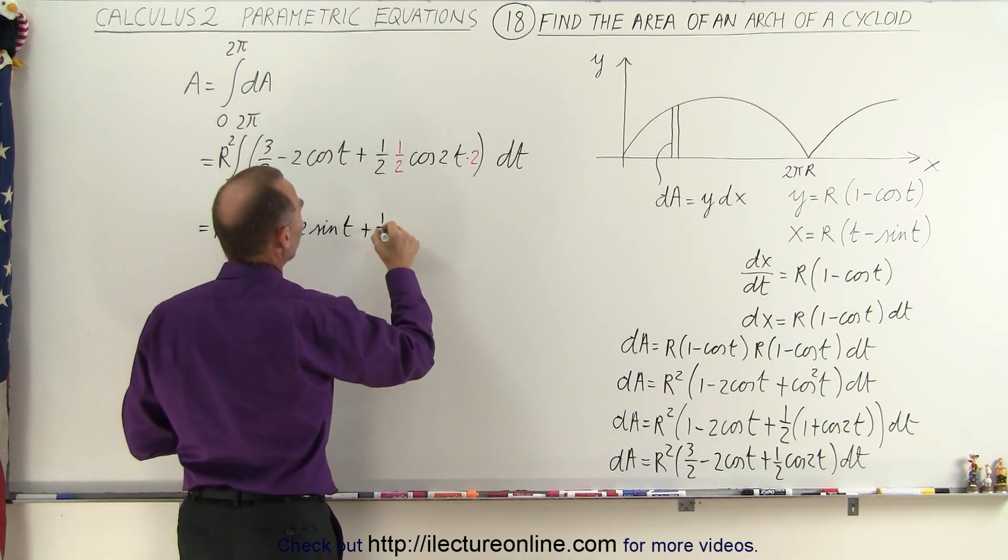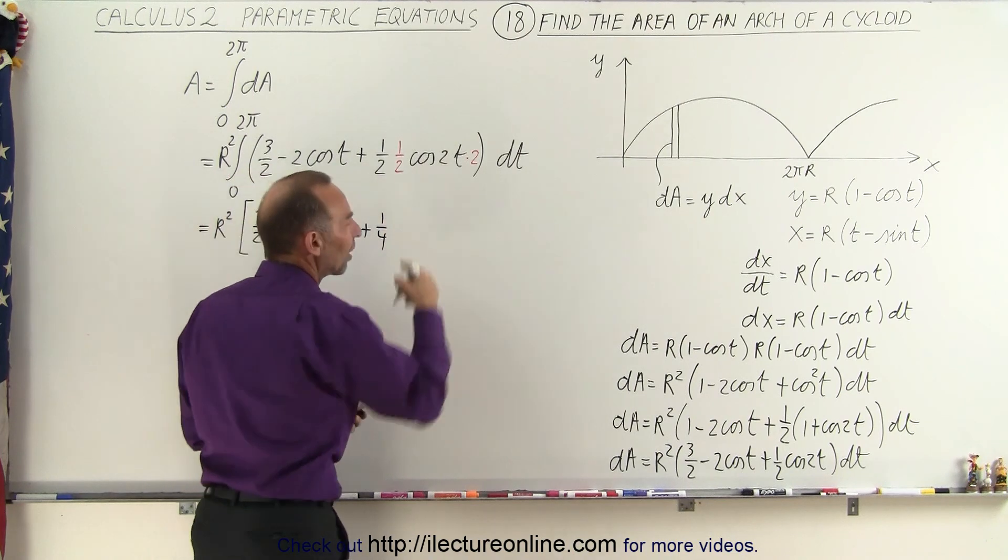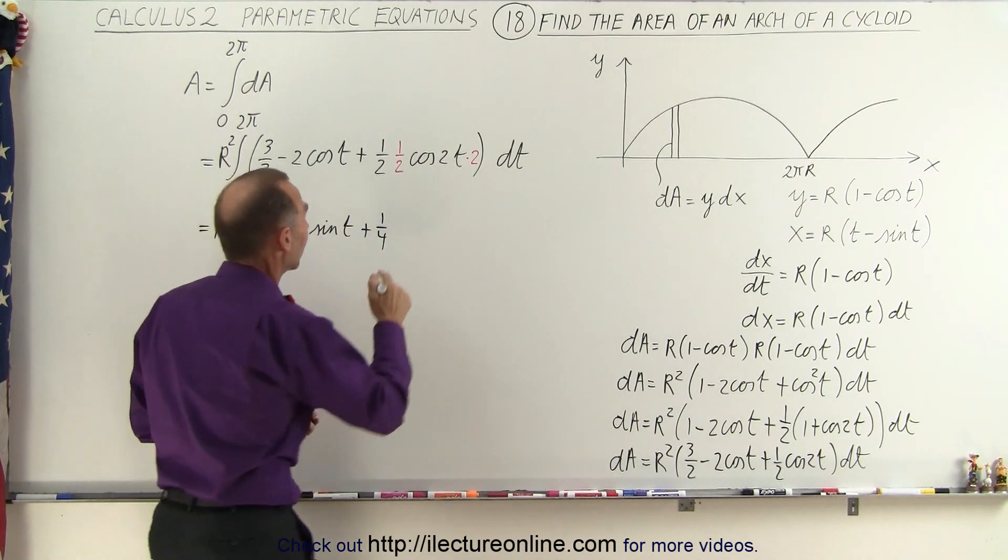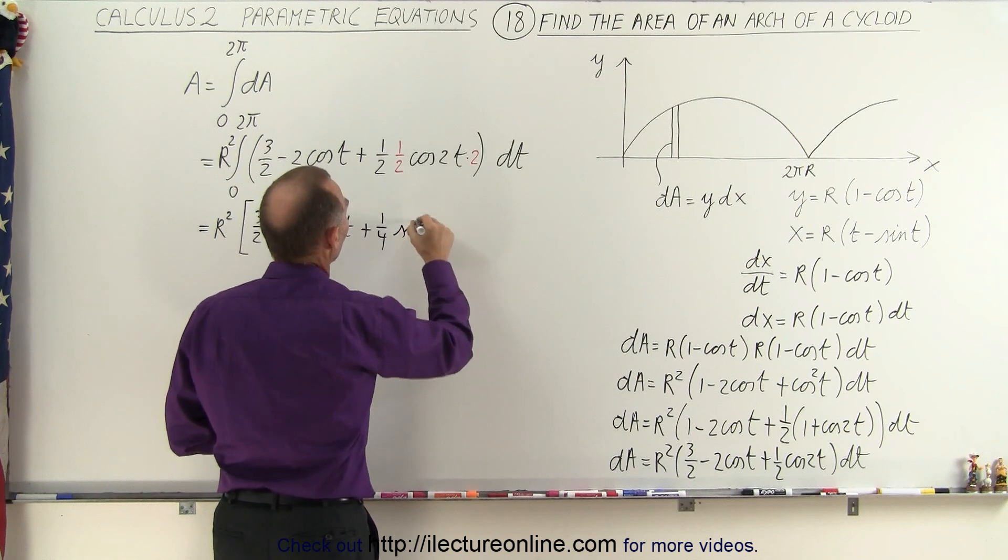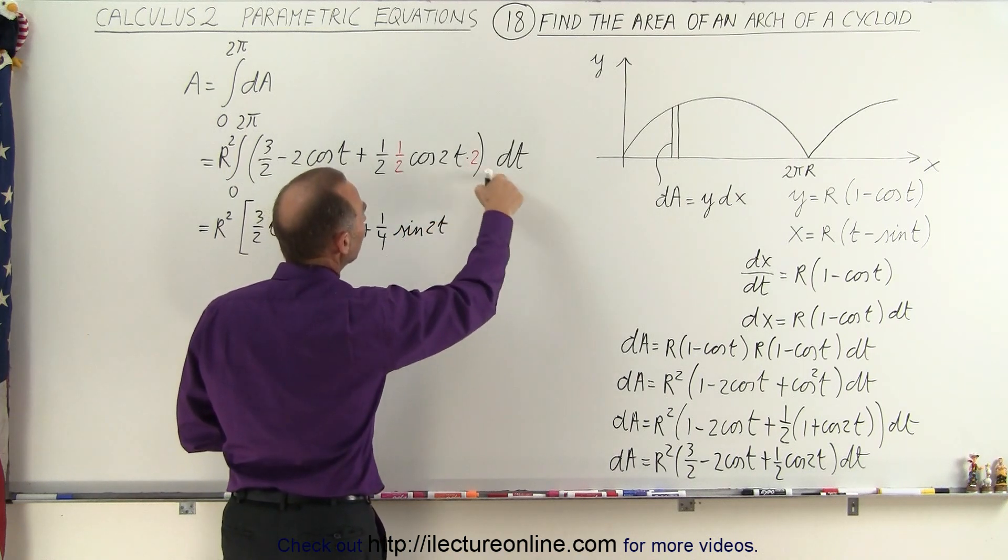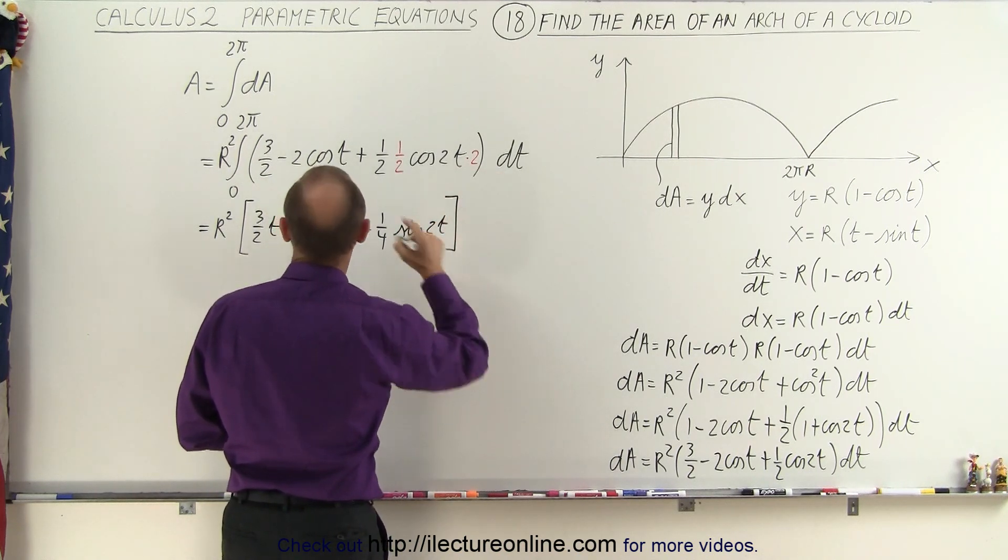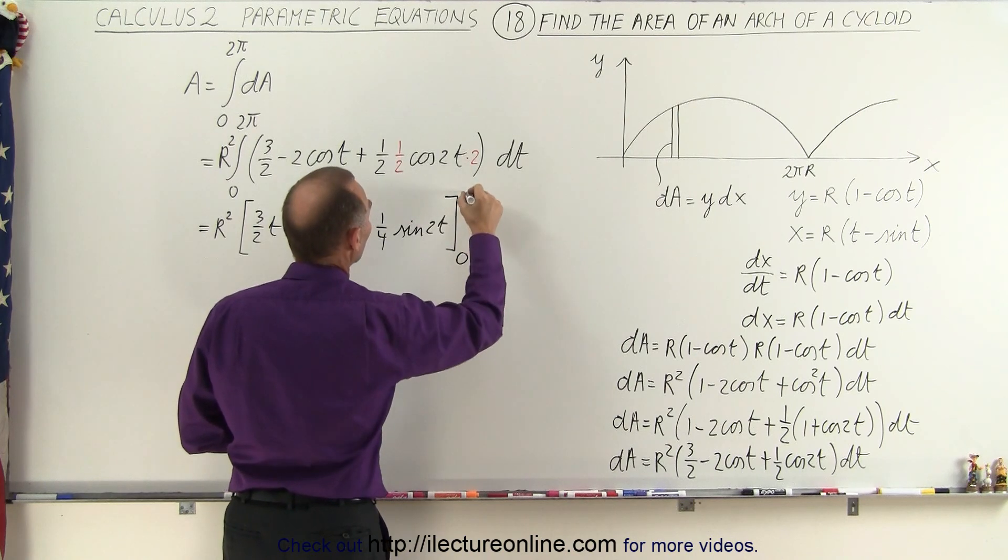And then here plus one quarter the cosine of 2t. When we integrate the cosine we get the positive sine so we get the sine of 2t. The 2 dt drops off and the limits of integration from 0 to 2 pi.